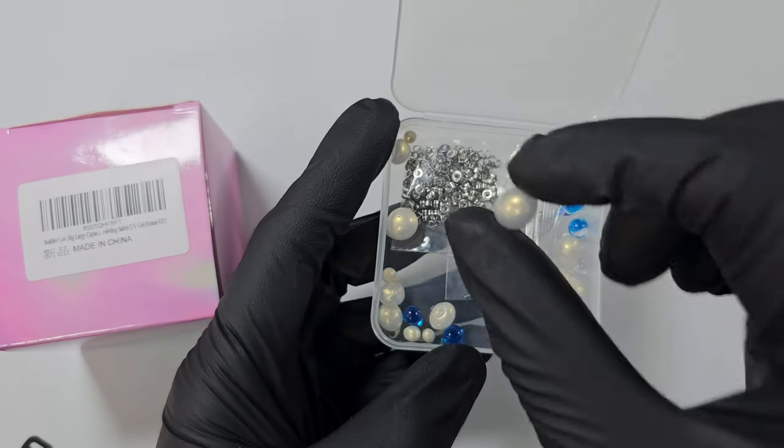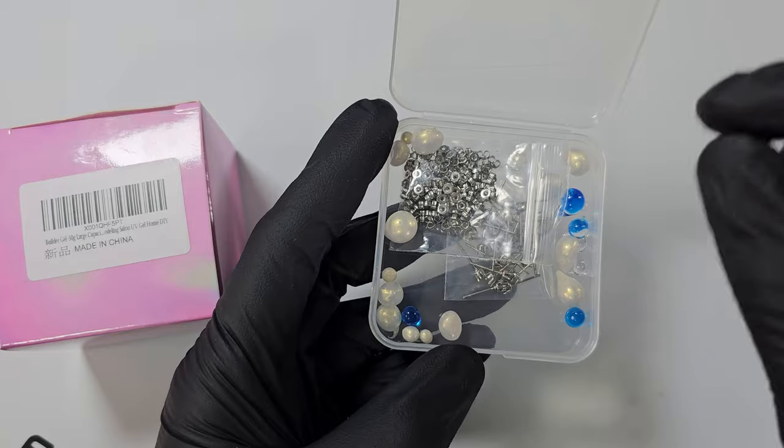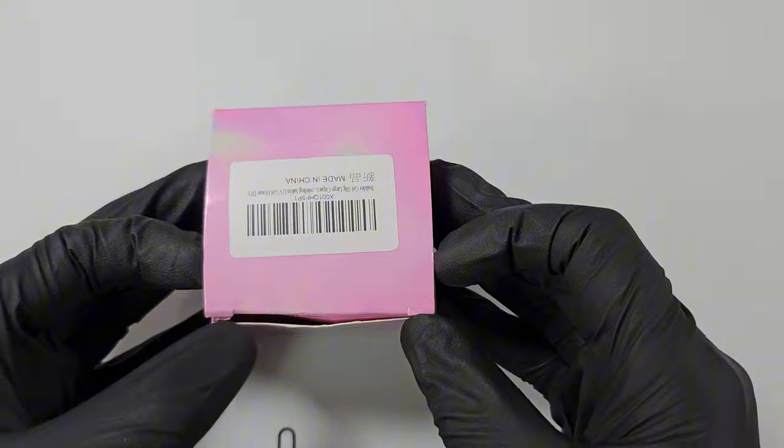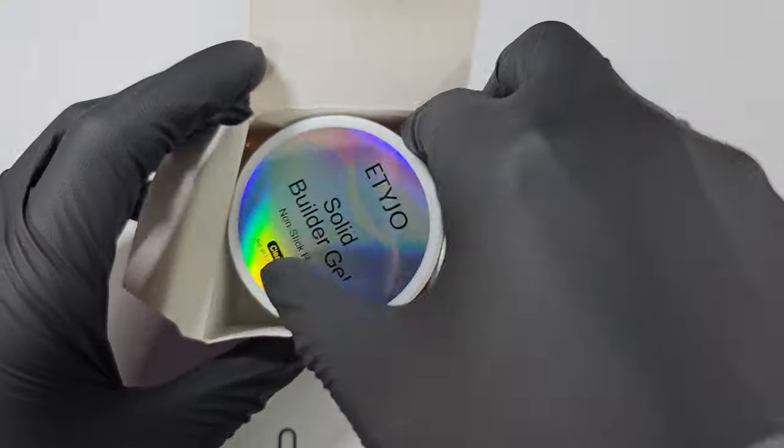But we can't really determine the size of it. As we're dripping it into the shampoo, you can to an extent, but it's fairly tricky. I want to see if I can make some pearls using this builder gel.